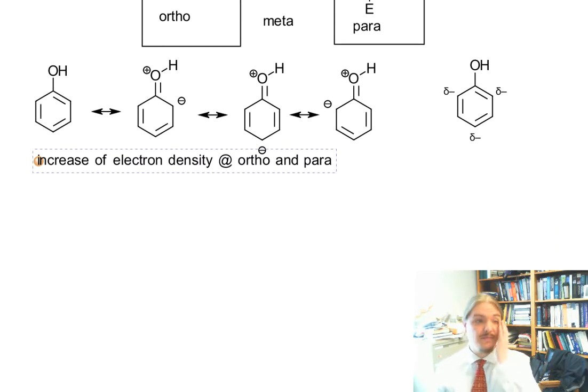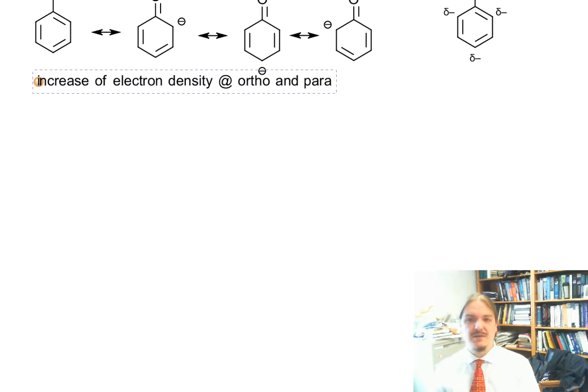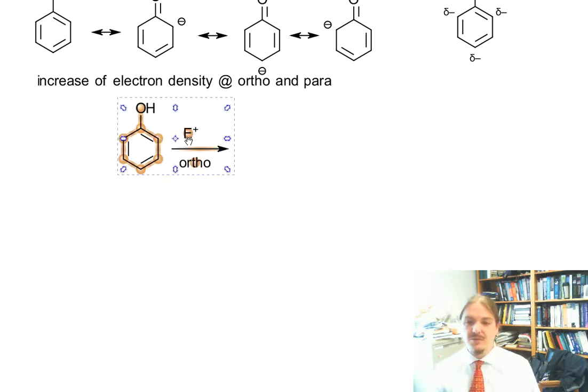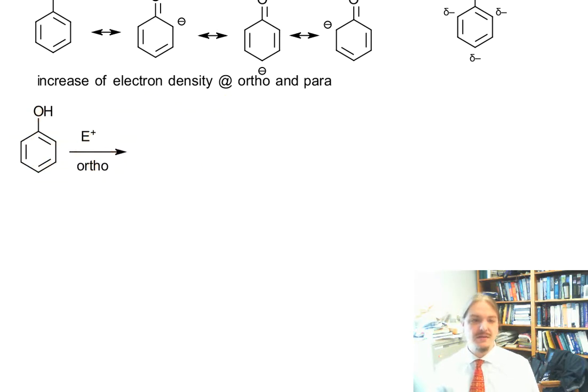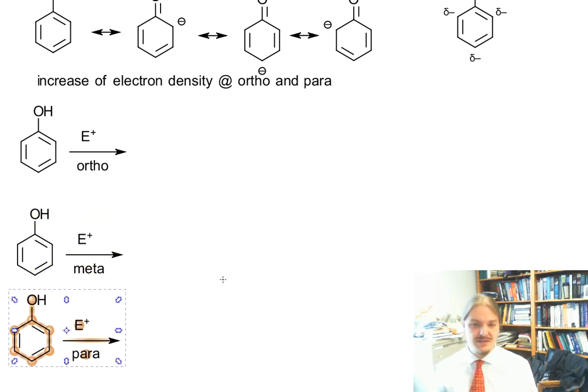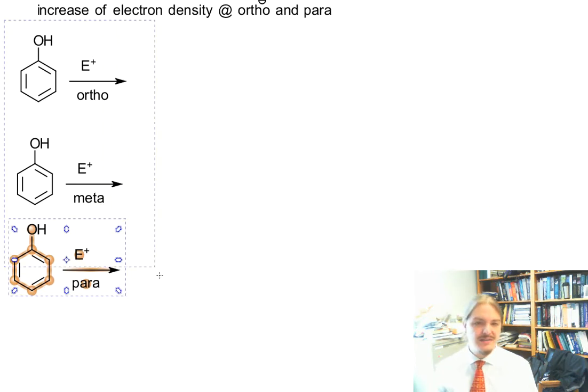I want to look at another way and I've already pre-drawn some of these resonance structures because there's going to be a lot of them and I don't want to consume my entire video drawing all these structures. What we're going to do is we're going to look at the intermediates that form by each of the three possible